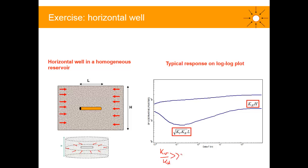So that means that KV needs to be larger than KH, and then our length is larger than the net reservoir thickness, like this. To get the stabilization lower than this one.